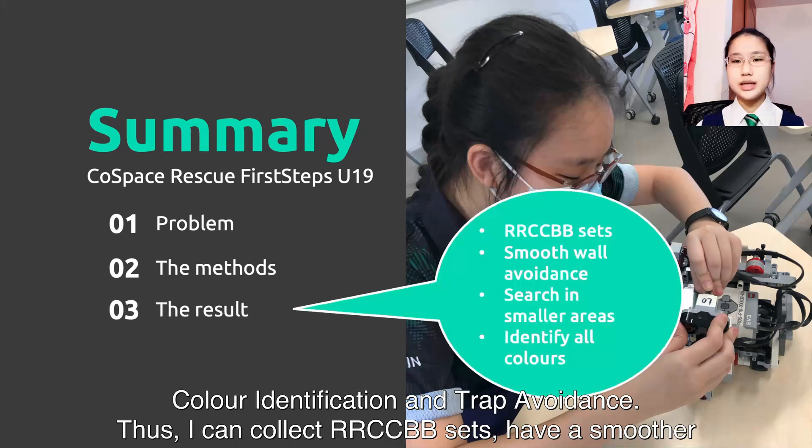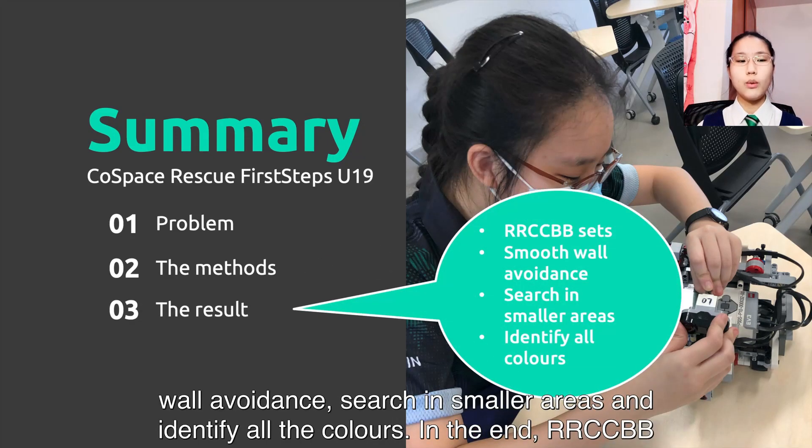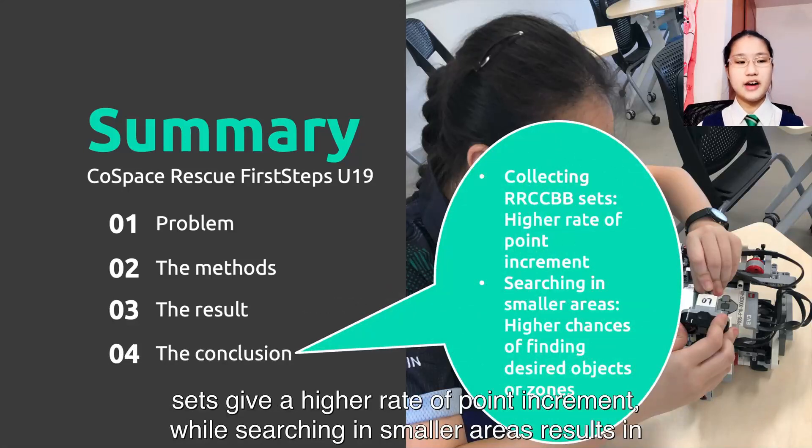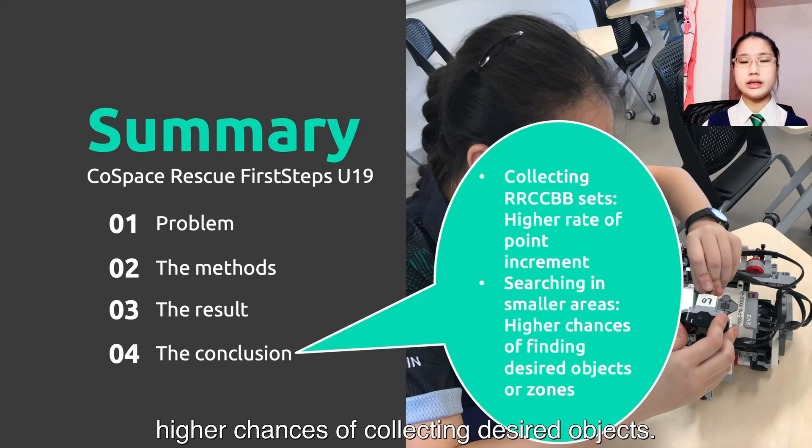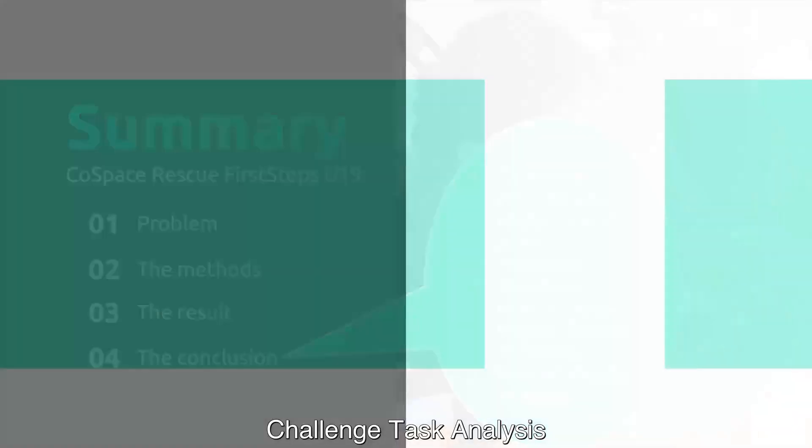Thus, I can collect RRCCBB sets, have sooner wall avoidance, search in smaller areas, and identify all the colors. In the end, RRCCBB sets give a higher rate of points increment, while searching in smaller areas results in higher chances of collecting desired objects.